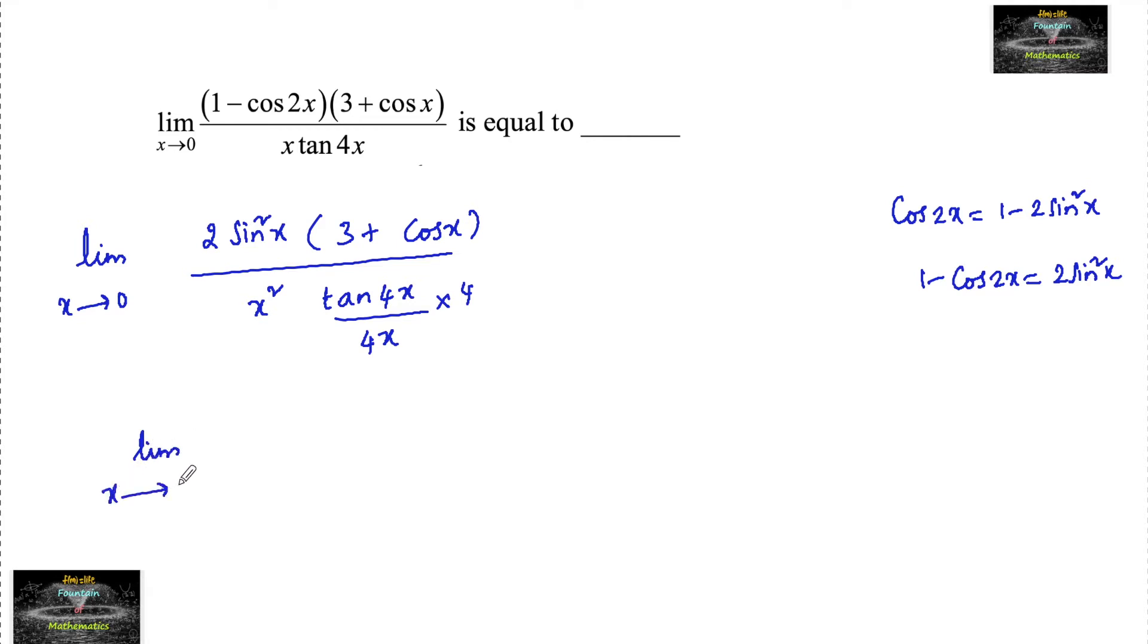Limit extends to 0, 2 times (sin x / x) whole square into (3 + cos x) into 1 upon (tan 4x / 4x), so into 4 here.